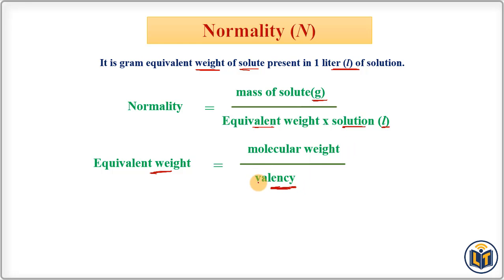For different substances we have different rules to find the valency of a compound. For acids we count number of hydrogen ions. Let's say I have H2SO4 and it is having two hydrogen ions, then valency for this acid will be two.